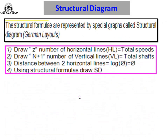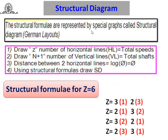A structural diagram is nothing but a special graph which represents the structural formula. To construct it, we have to draw z number of horizontal lines, where z means total speed steps. In this example z equals 6, so the total speeds are 6. The different speed steps are n1, n2, n3, n4, n5, n6 — total 6 — where n1 is the minimum and n6 is the maximum.